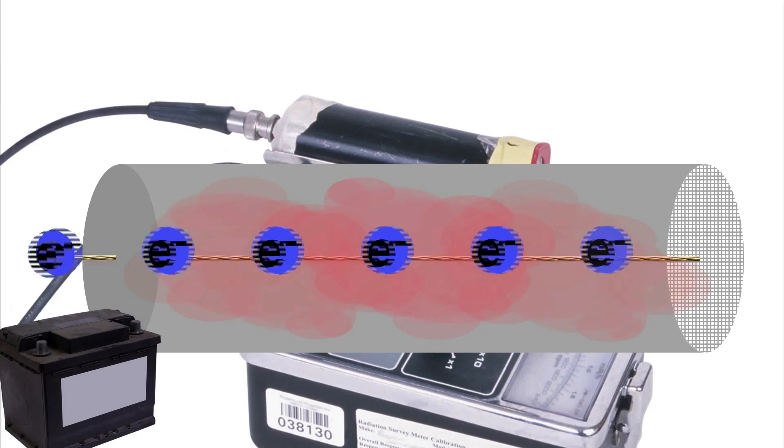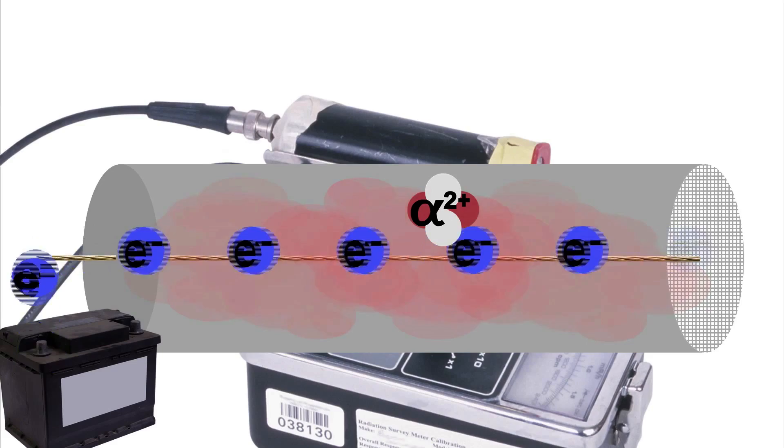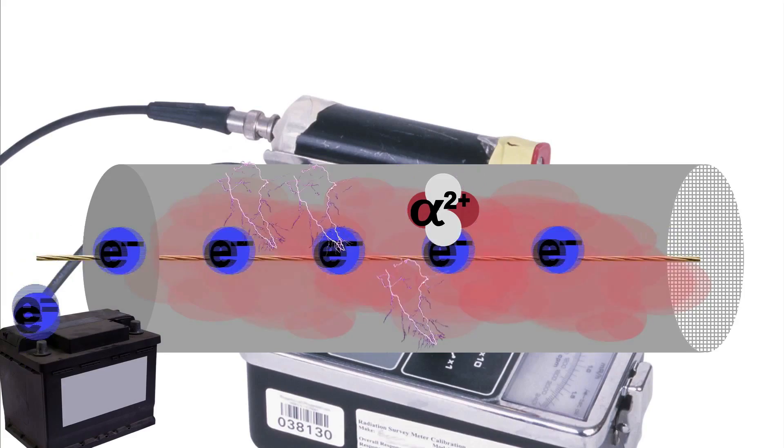When ionizing radiation enters the window, the gas inside the tube briefly conducts electricity between the tube and the wire. A magnification effect occurs, amplifying the detection and producing a clicking noise.